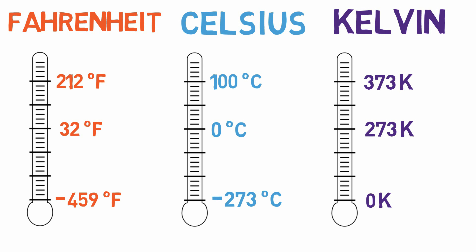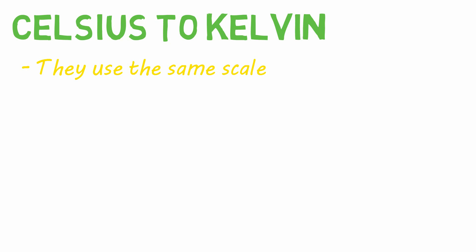Converting between Celsius and Kelvin is easy, because one degree movement on the Celsius scale is equal to one on the Kelvin. There is just a difference of 273 between the temperatures, so simply take the Celsius temperature and add 273 to get Kelvin.